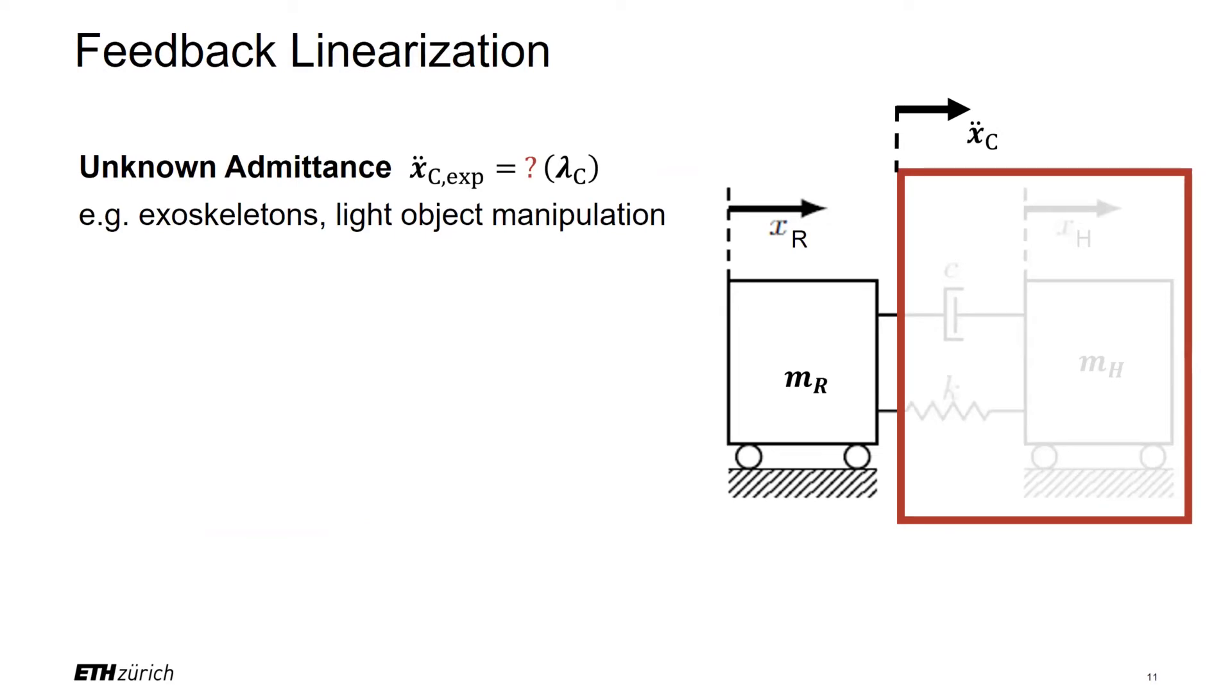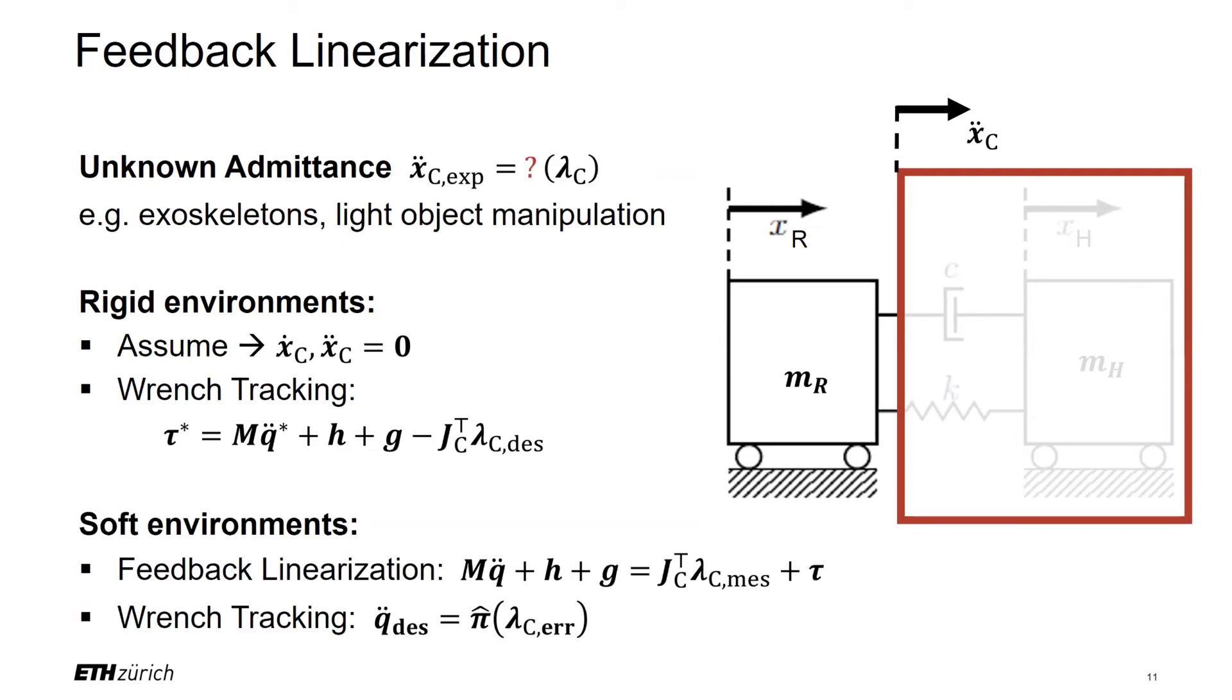However, in the case of exoskeletons, we are dealing with an environment of unknown admittance. In this case, we can do two types of assumptions. We can assume the environment to be fairly rigid, which allows us to use the same formulas as for the known admittance. However, in the case of the human interacting with the robot, we have to assume a soft environment. Soft means that we do not expect the interaction force to change much when we move the robot's interaction point. This allows the assumption that the interaction force will stay similar to the measured one during the next control cycle. Hence, instead of using the expected acceleration for the feedback linearization, we are using the estimated interaction force.